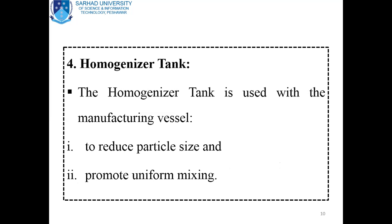Another part is the homogenizer tank. The homogenizer tank is used with the manufacturing vessel. The main objective of this homogenizer tank is to reduce the particle size to the desired limit, and the second advantage is to promote uniform mixing. Particle size reduction is done by the homogenizer tank, which is used with the manufacturing vessel, and it is also responsible for the promotion of uniform mixing.